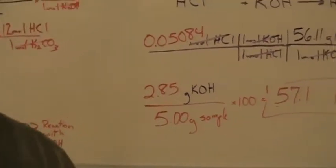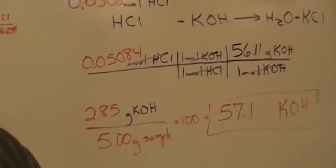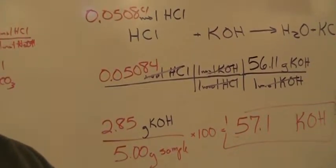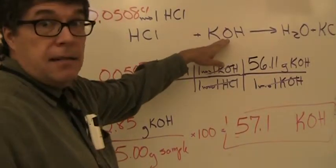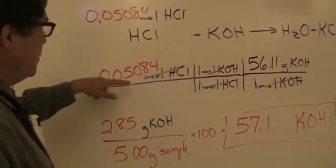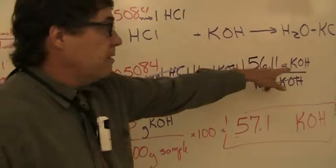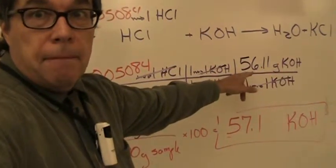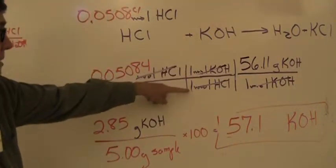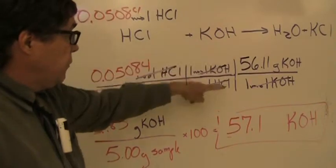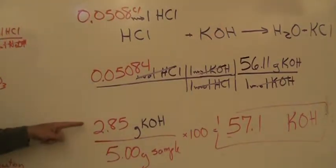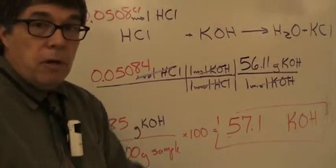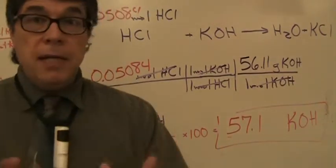Now that I know that, here's the number of moles of hydrochloric acid that reacted with the potassium hydroxide. I'm going to do the calculation to see how much potassium hydroxide that actually would be. One mole of potassium hydroxide in the equation for every mole of HCl, and the molar mass of potassium hydroxide is 56.11, so that comes out to 2.85 grams of potassium hydroxide, and that's 57.1%.